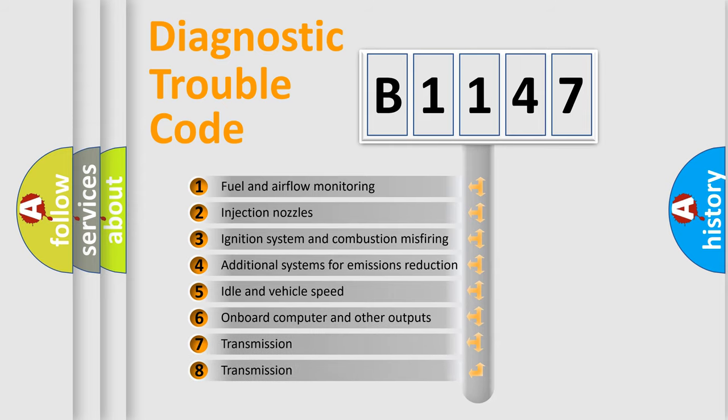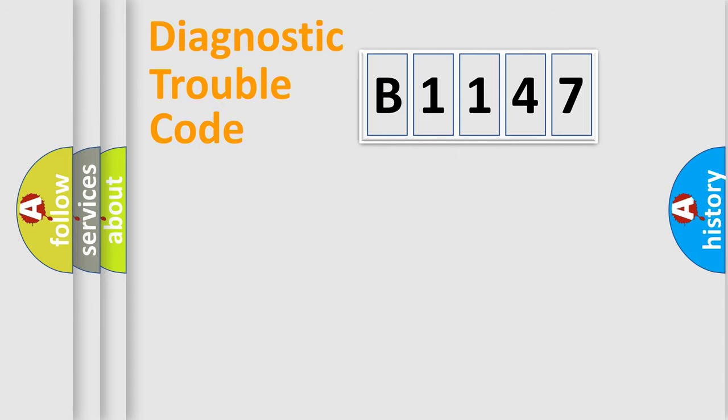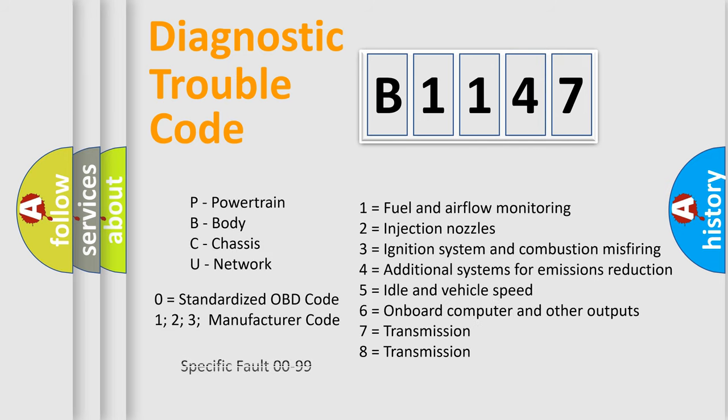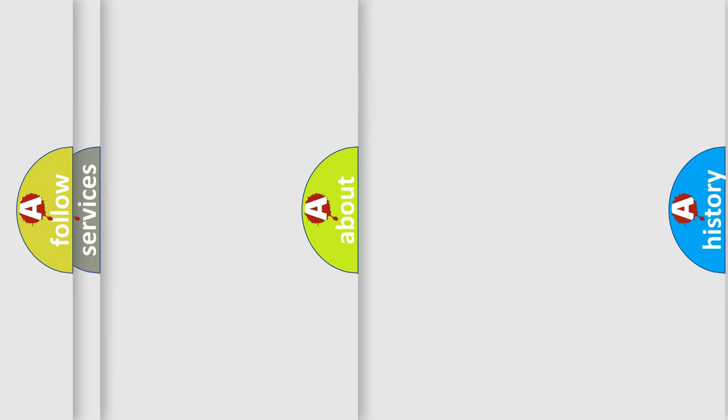The third character specifies a subset of errors. The distribution shown is valid only for the standardized DTC code. Only the last two characters define the specific fault of the group. Such a division is valid only if the other character code is expressed by the number zero.